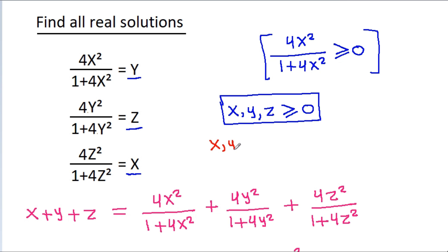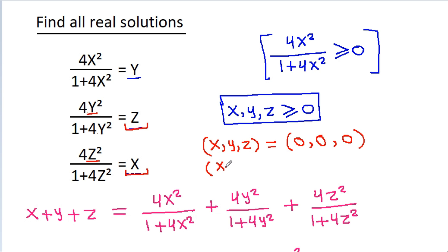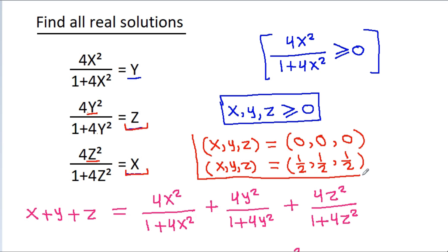So x, y, g: if x = 0, then g must be 0, and if g = 0, then y must be 0. And if x = 1/2, then g cannot be 0, g must be 1/2, and if g = 1/2, then y cannot be 0, y should be 1/2. So these are the two solutions: (x, y, g) = (0, 0, 0) and (x, y, g) = (1/2, 1/2, 1/2).